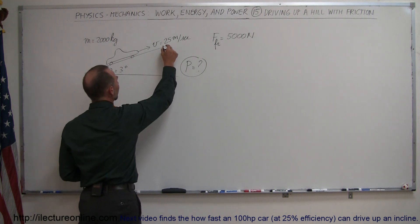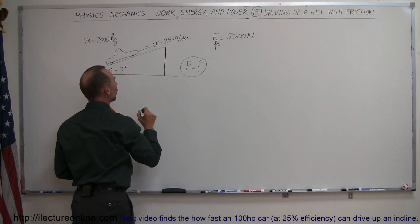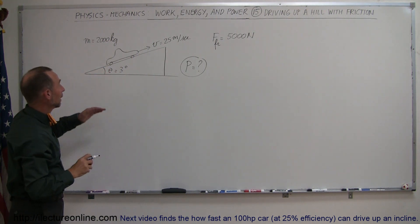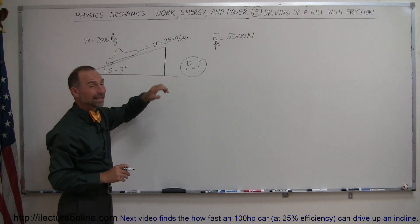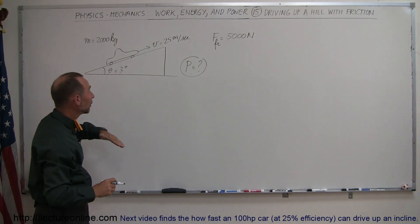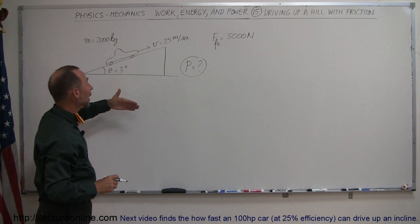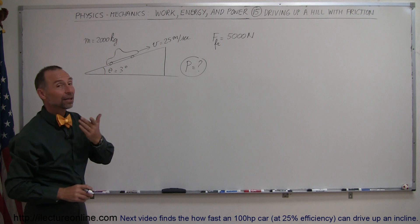So again, what we have to realize is that in this case, the power required will be both in the need to increase the potential energy of the car. It's driving up the hill at a constant speed. The kinetic energy isn't changing, but the potential energy is changing. So you need power to gain potential energy, and then you need power to